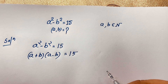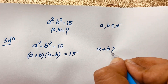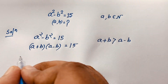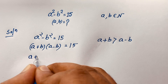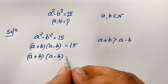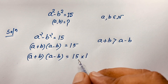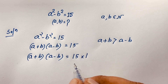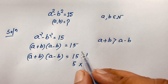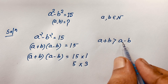At this point, notice that a + b is always greater than a - b. So (a + b)(a - b) = 15. The factor pairs of 15 are 15 × 1 and 5 × 3. Only these two cases are valid because a + b must always be greater than a - b.